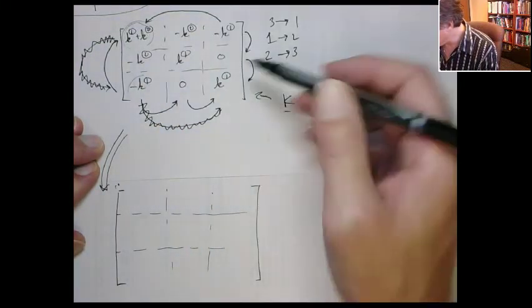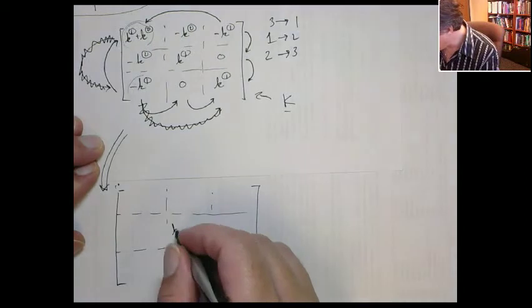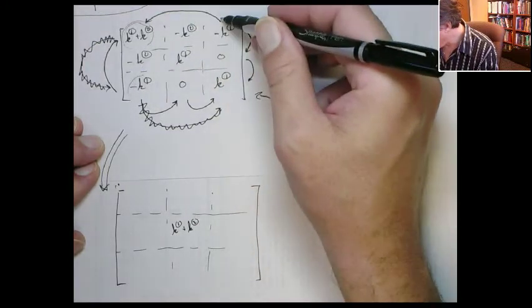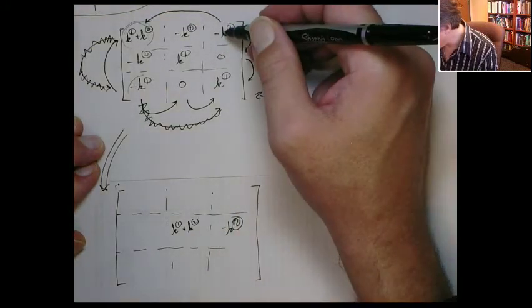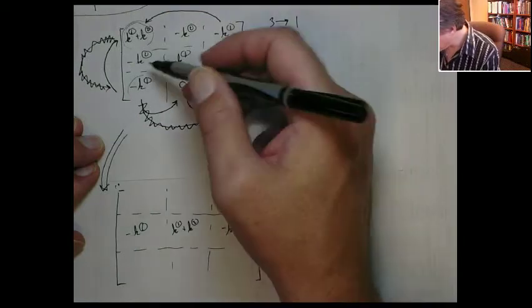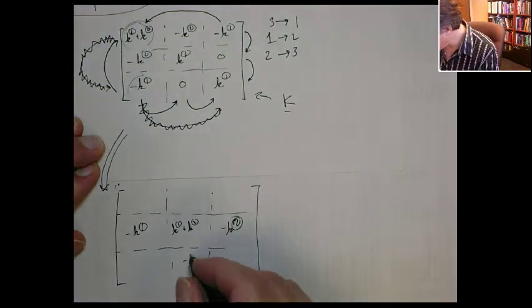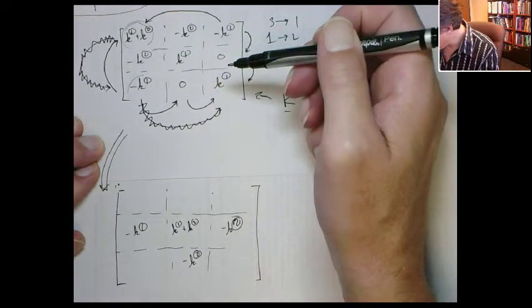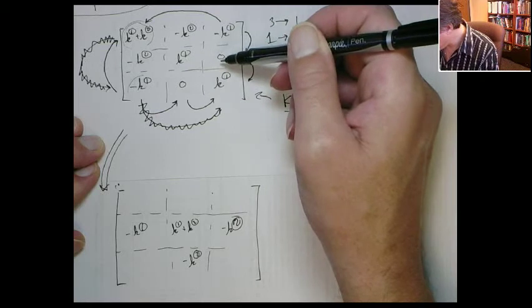This one here goes to the second row, second column, so it's K1 plus K2. This one here goes to the third column, second row, so that's going to go here. This one goes to the first column, second row. This one goes to the third row, second column. This entry here goes to the third row, third column.